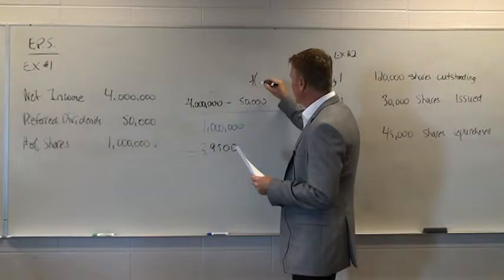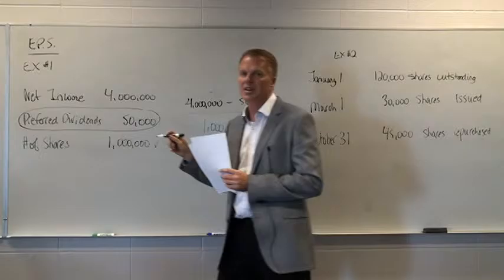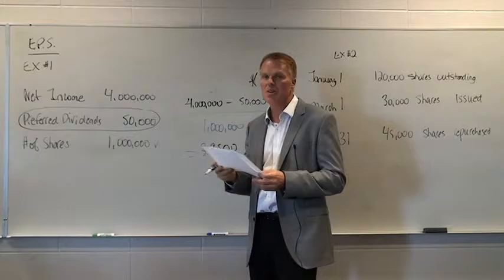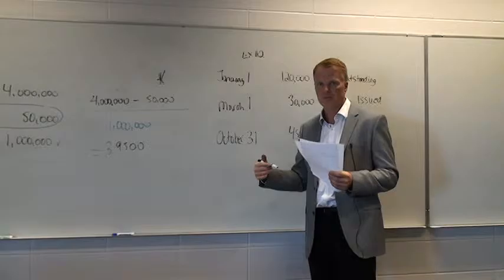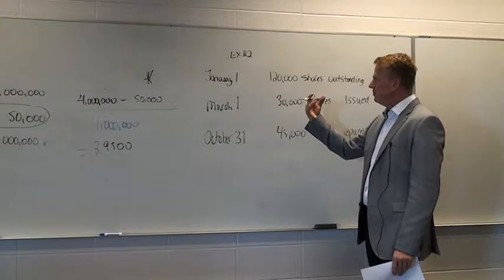Again, the key thing — let's not forget to take out preferred dividends from our net income in the numerator. Second example: our second example involves the bottom part of the equation, the number of shares.